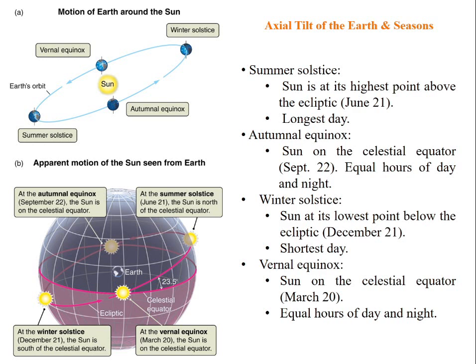Autumnal equinox: sun is on the celestial equator, September 22nd. At this situation, there are equal hours of day and night.